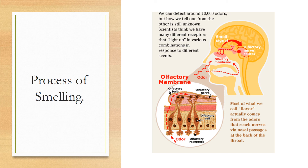You can see how the smell travels into the nose, how the odor hits the olfactory membrane, hits the receptors, and then travels through the olfactory nerve. Most of what we call flavors actually comes from odors that reach nerves via the nasal passages and the back of the throat. So when you taste a chocolate bar, you're tasting chocolate largely because you smell the chocolate.